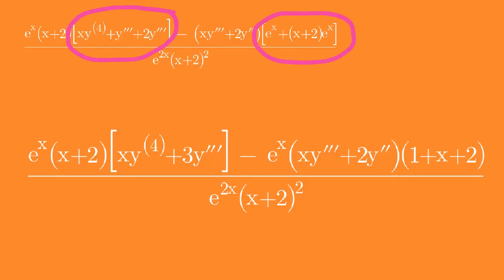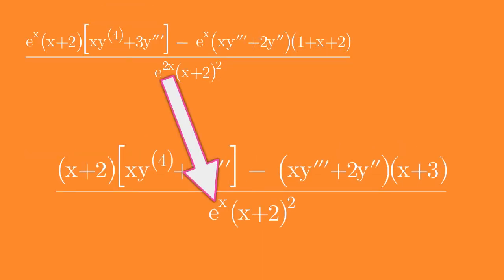Notice that e raised to x appears in the numerator and in the denominator. In this step, e raised to x disappears from the numerator because it was a factor there and e raised to 2x was in the denominator. By the law of exponents, on the same base, exponents are subtracted when powers are divided, so x minus 2x equals negative x.